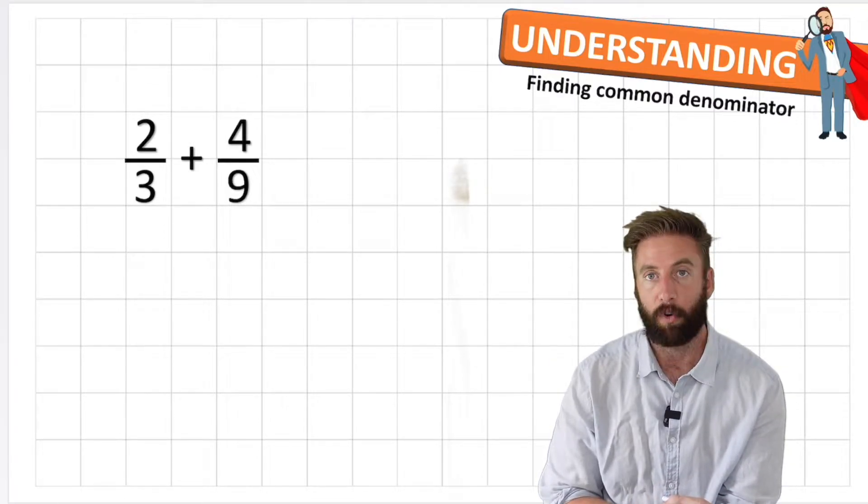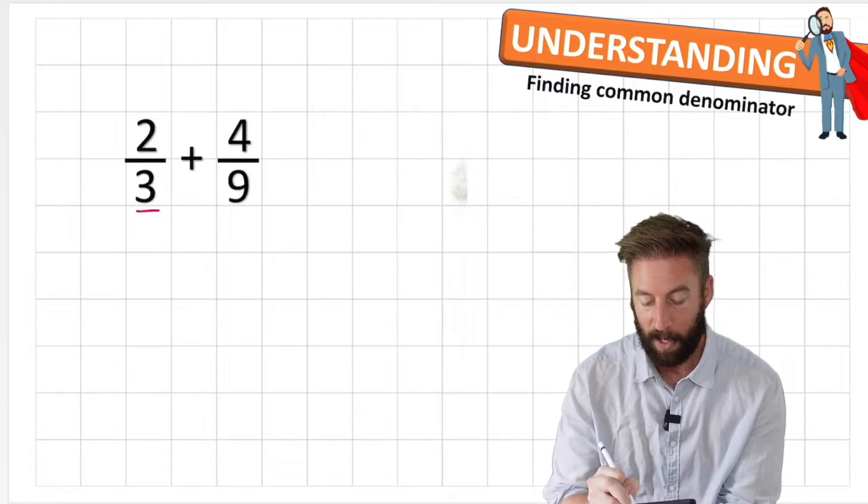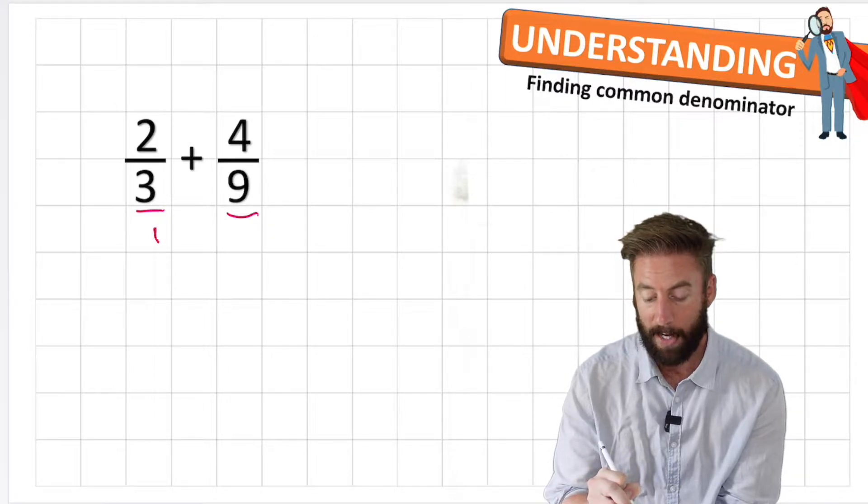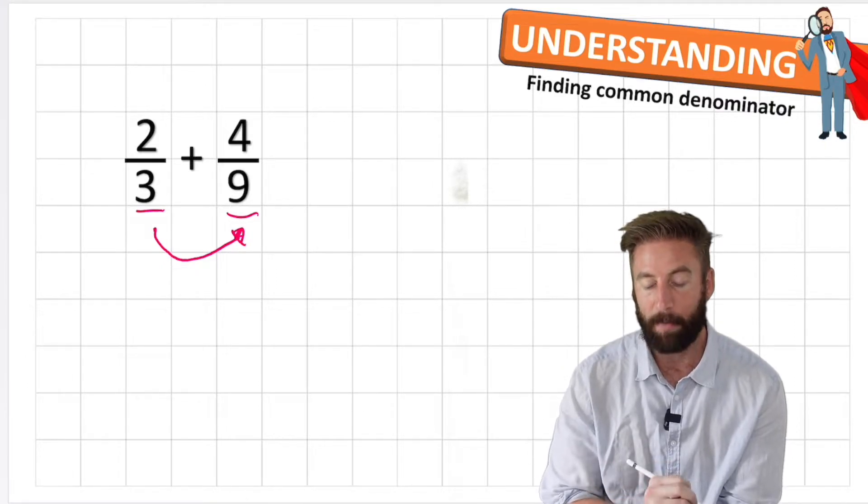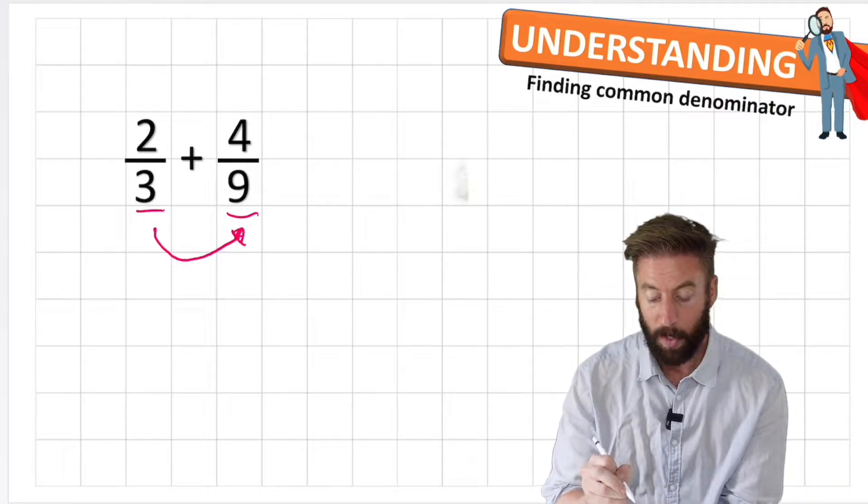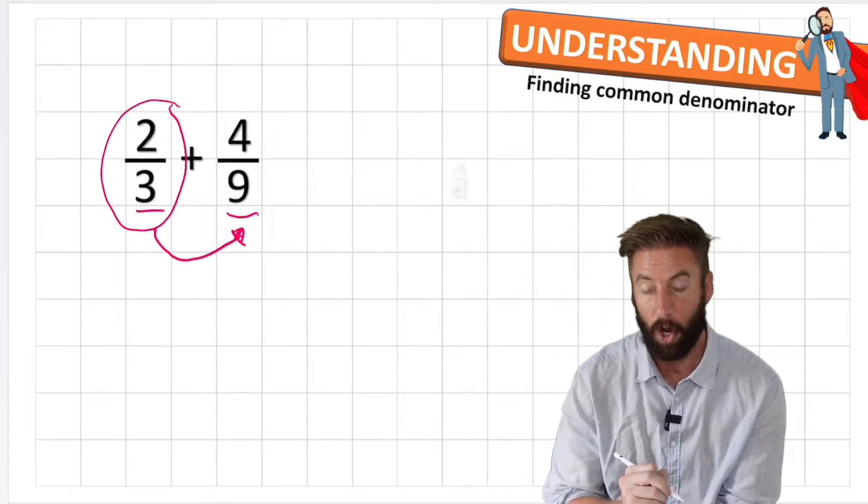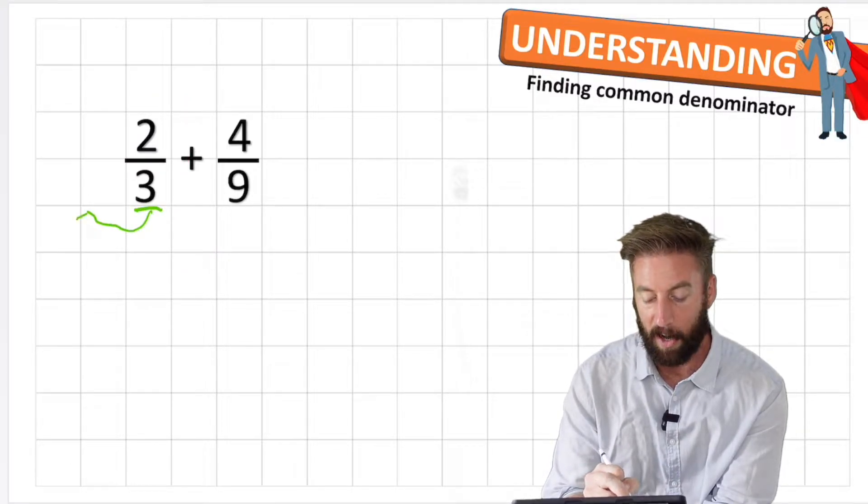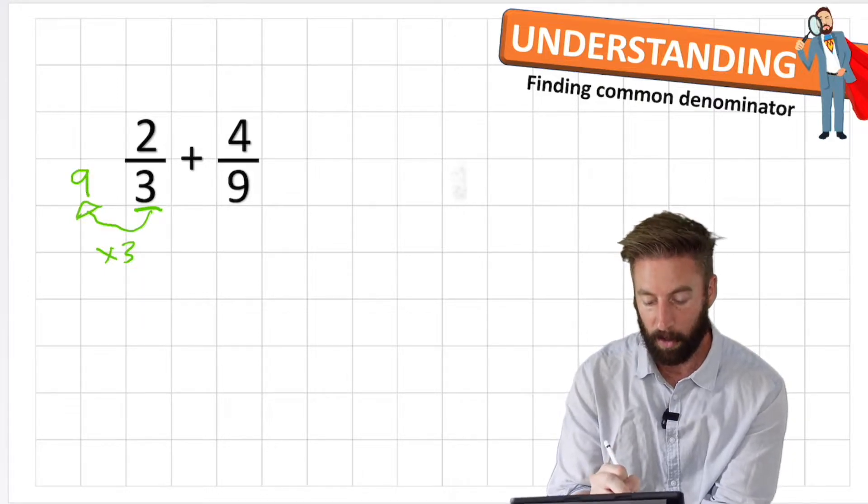Question one says 2/3 plus 4/9. Some of you straight away can look at my denominators and we can see a relationship here - the relationship is that 9 is in the 3 times table. So therefore I can use that knowledge to help me find an equivalent fraction. What I'm going to do is look at this fraction here and try and turn it into a fraction with 9 as a denominator.